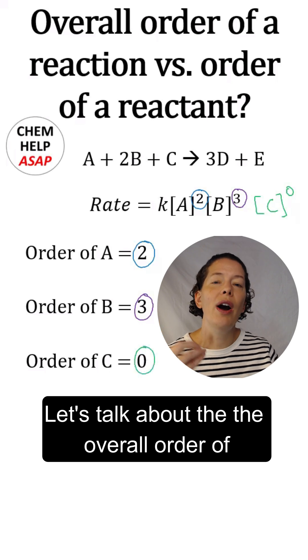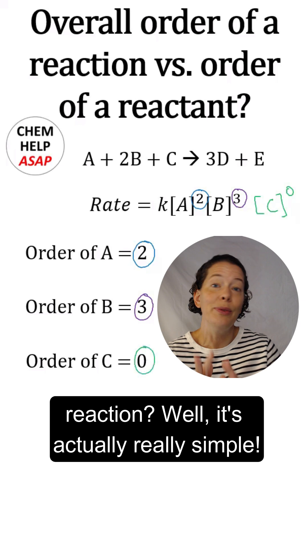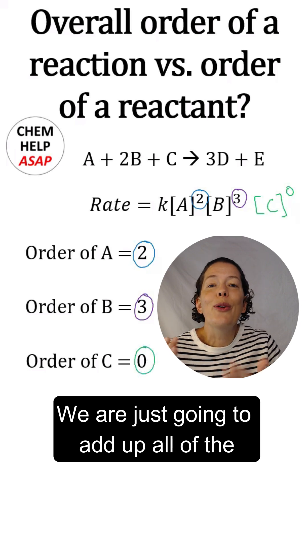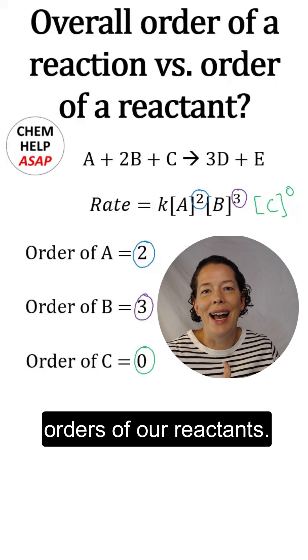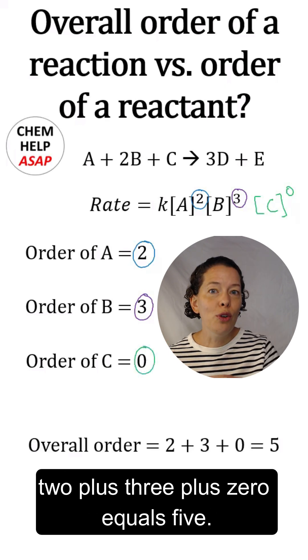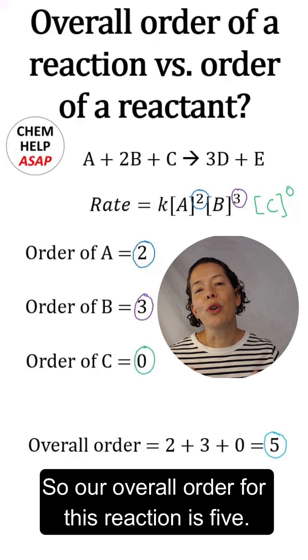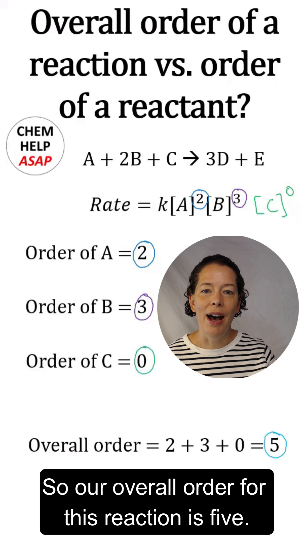So those are the orders of all of our reactants. Let's talk about the overall order of this reaction. So how do we do the overall order for the reaction? Well, it's actually really simple. We are just going to add up all of the orders of our reactants. So for this reaction in particular, our overall order is just going to be 2 plus 3 plus 0 equals 5. So our overall order for this reaction is 5.